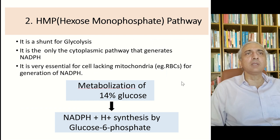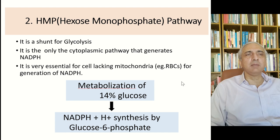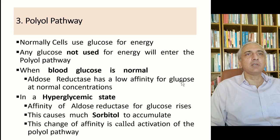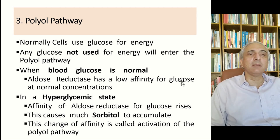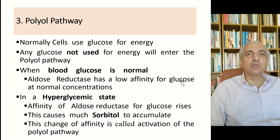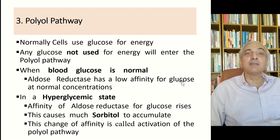The second pathway is the hexose monophosphate pathway, a shunt for glycolysis and the only cytoplasmic pathway that generates NADPH. It is essential for cells lacking mitochondria for NADPH generation. This pathway is not very important in cataract development.